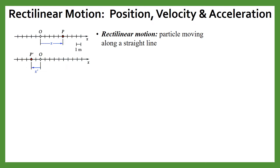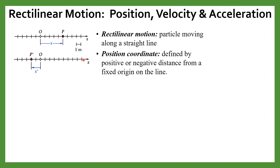Now we will discuss rectilinear motion. Consider a particle moving in a straight line. Initially the particle is at point O, and after travelling a distance x it moves to point P. This P defines the position coordinate of the particle. It can be positive if the particle is moving toward the positive x-axis, or negative if moving in the opposite direction.